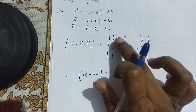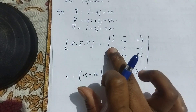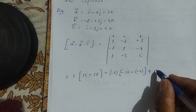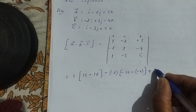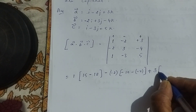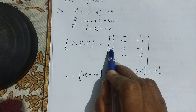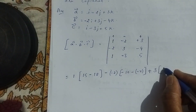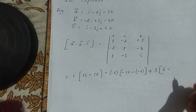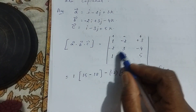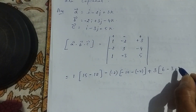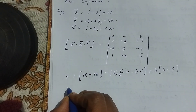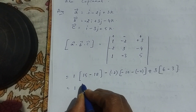For the third element, we apply the plus sign. The element is plus 3. Leaving its row and column: minus 2 times minus 3 is plus 6, minus 1 times 3 is minus 3. So the third term is plus 3 times (6 minus 3), which equals plus 3 times 3.